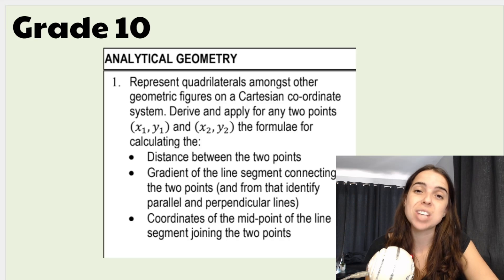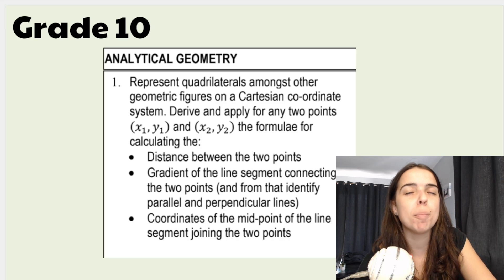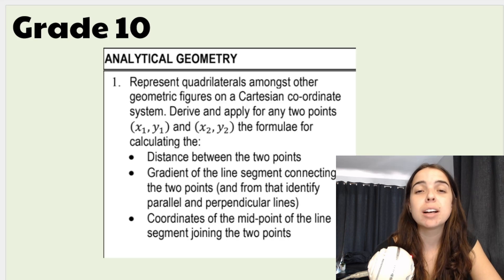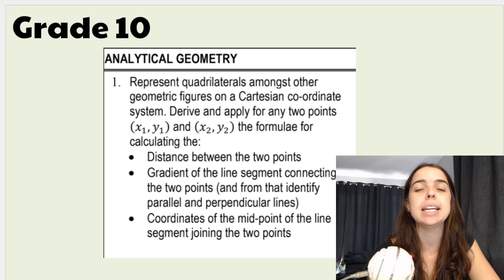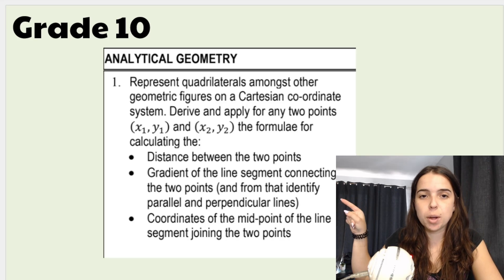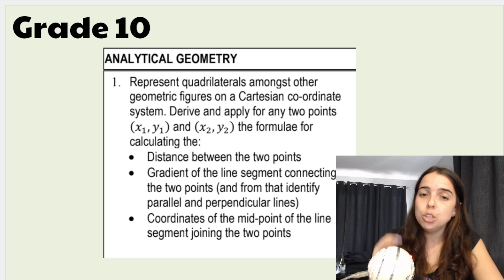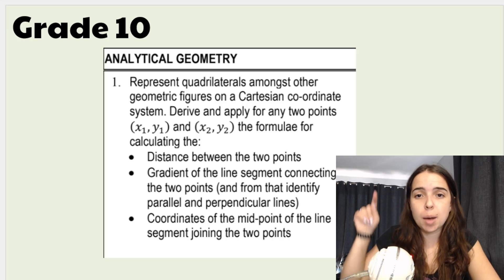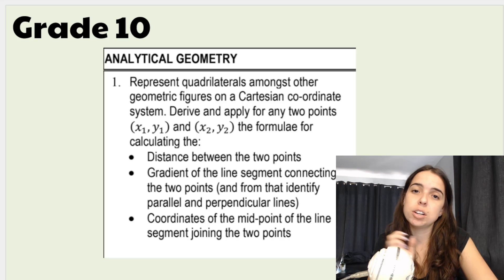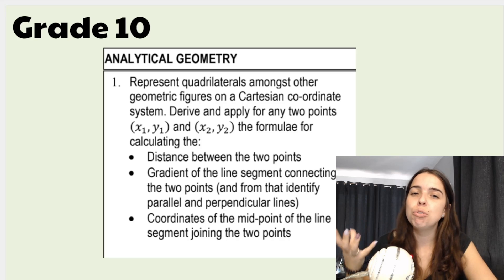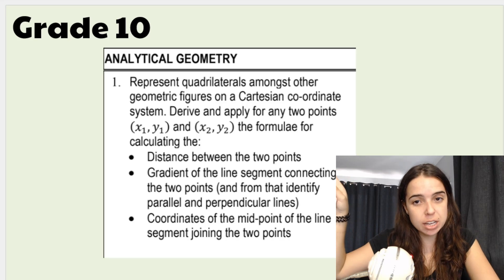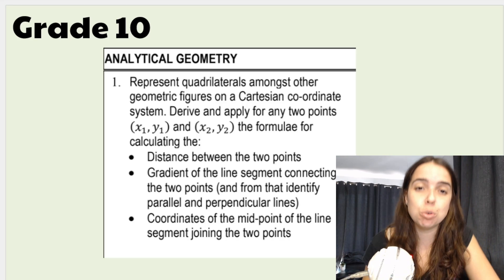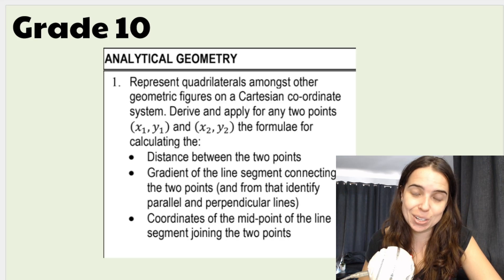Then we've got a second geometry section called analytical geometry. This isn't completely new — you covered some related stuff in grade 9, for example calculating the gradients of a line. You can see it listed here: calculating the gradient of a line segment. You'll also be doing things like the distance formula and coordinates of the midpoint, and working with quadrilaterals on the Cartesian plane using new formulas. Going over Cartesian plane, coordinates, and gradients from grade 9 will be helpful for understanding analytical geometry.